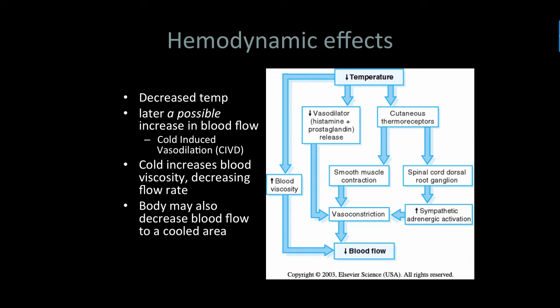When we decrease temperature, we hit those cutaneous thermoreceptors, go through either smooth muscle or the spinal cord, and get vasoconstriction. We also increase sympathetic activation, giving us decreased blood flow. We decrease our vasodilators and get vasoconstriction and decreased blood flow. We also increase blood viscosity at lower temperatures, so we also decrease blood flow. Those are the hemodynamic or blood effects.